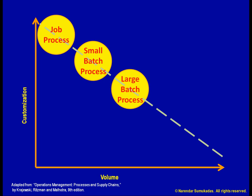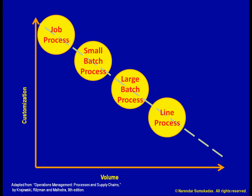As we move further down the diagonal, we get to a point where the process is doing the same thing over and over. We call this a line process. This is the kind of process most closely associated with the mass production assembly line setting.